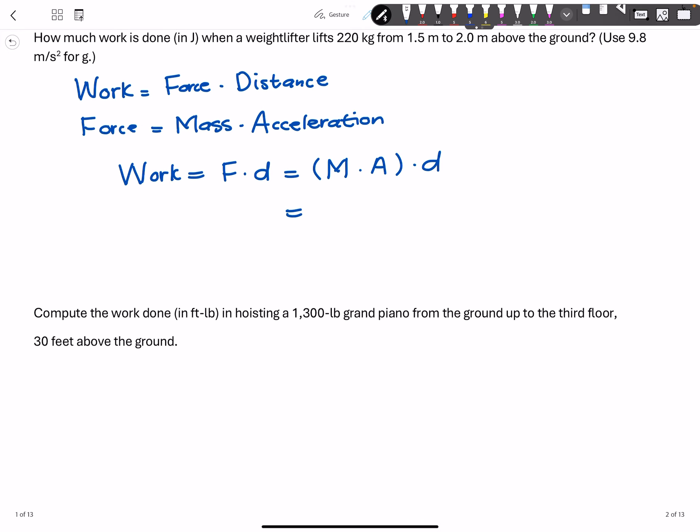All right, so for my problem, the mass, that's the 220 kilograms. The accelerational constant due to gravity is 9.8 meters per second squared.